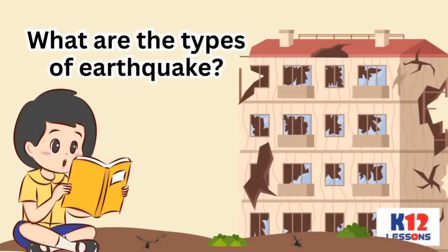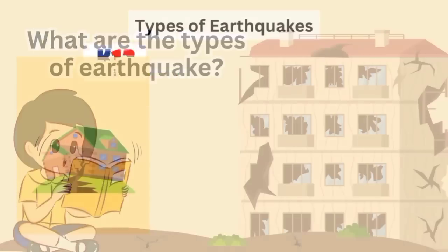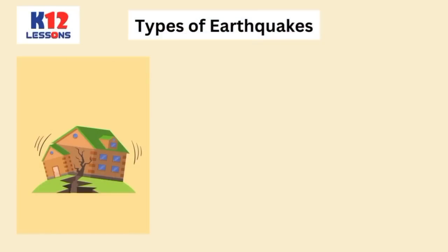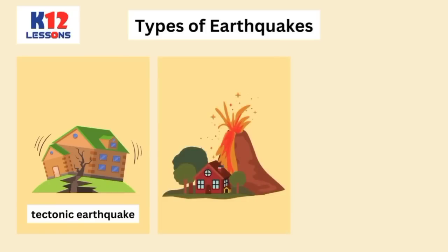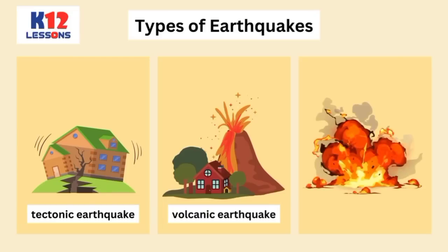What are the types of earthquake? If an earthquake is due to the sudden movement of rocks or when two tectonic plates collide against each other, it is called a tectonic earthquake. If it is due to the movement of magma within the volcanoes, it is called a volcanic earthquake. Sometimes earthquakes also occur because of human activity. Big explosions and the wrong treatment of the ground may trigger man-made earthquakes.